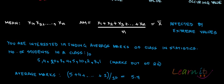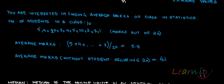I'll give you an example. Suppose this is a data set of 10 students in a class. They've got marks out of 20 in the statistics exam. The marks are: 5, 4, 20, 3, 4, 5, 10, 2, 3, 1. In order to find out the average, you will just add them up together and divide by 10. Once you do that, you get 5.7. So the mean mark of this class is 5.7.